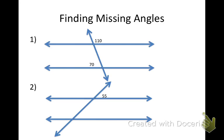Let's look at number one. I'm going to label these angles to make it easier. I have angle one, two, three, four, five, six, seven, eight, nine, ten, eleven, twelve, and thirteen.